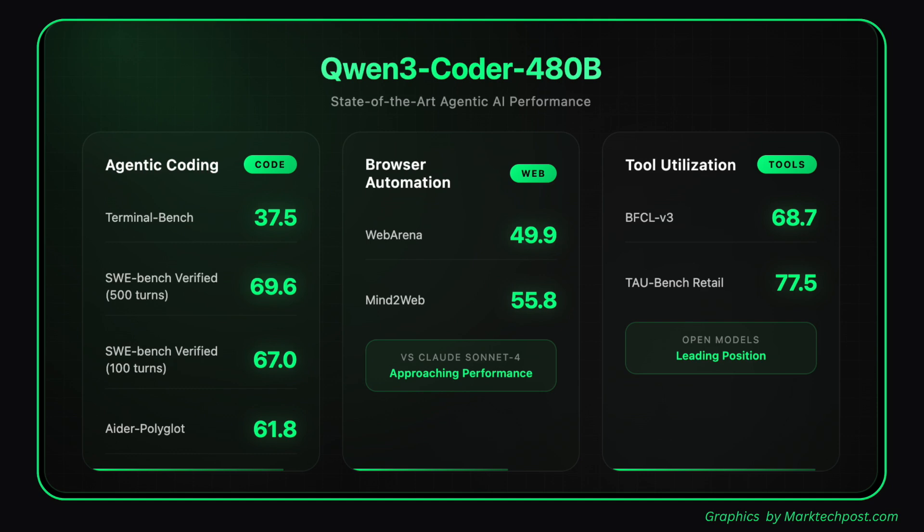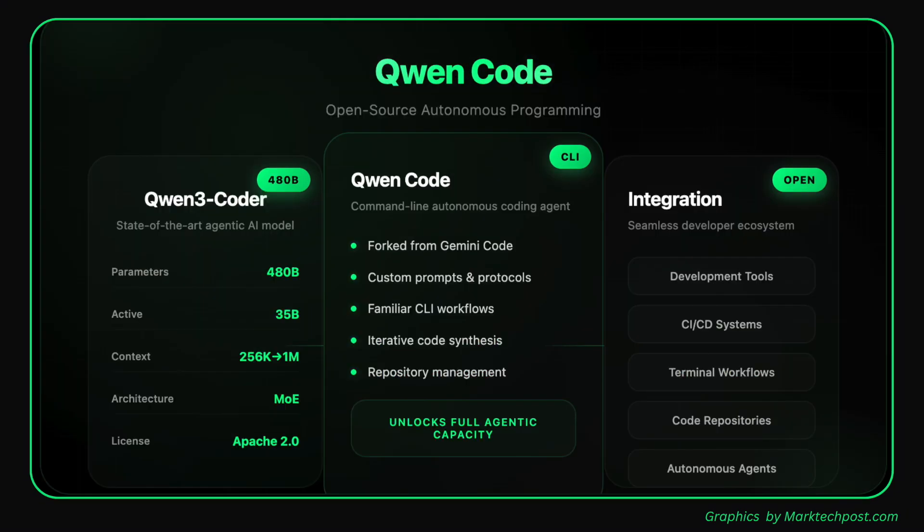It closely approaches or surpasses proprietary Claude Sonnet 4 in both tasks. For agentic tool use, it scores 68.7 on BFCL V3 and 77.5 on TauBench Retail, again maintaining a leading position among open models. This consistent top-tier performance across diverse, challenging benchmarks highlights its maturity and effectiveness as an agentic AI model for real-world development workflows.